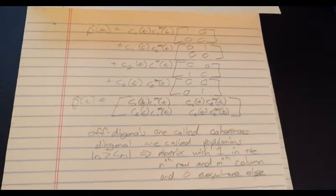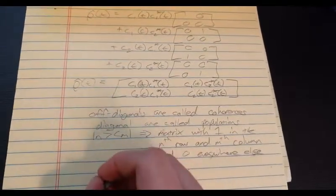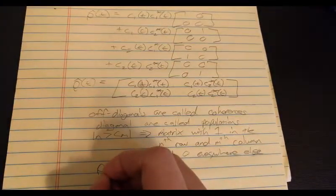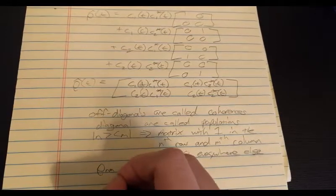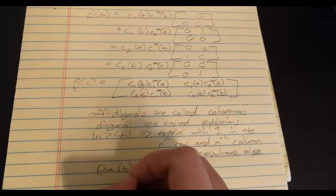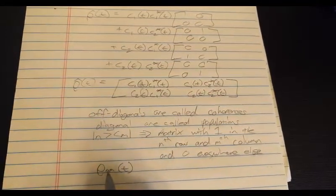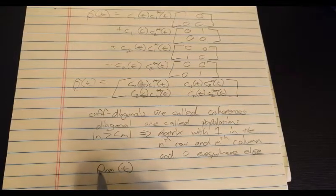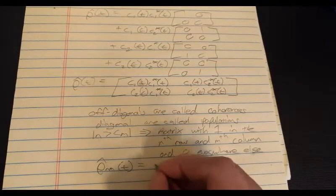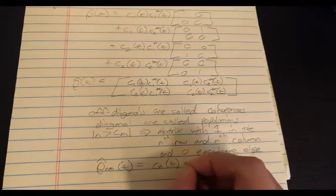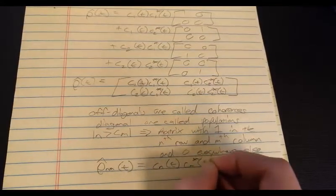And that's an important thing to notice. So therefore, we're going to introduce the notation rho n m, it's just the m nth element of the density matrix is equal to c n of t times c m star of t.